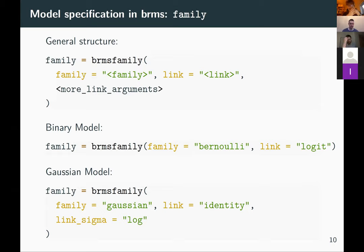To specify models in BRMS, first decide the model family — which just means the likelihood distribution. The family argument takes the name such as gaussian, bernoulli, or poisson, plus the link function. If the family has more than one distributional parameter, you can also specify additional link arguments for those parameters. For the binary model, the family is bernoulli with a logit link (the default). For the Gaussian model, the family is gaussian with an identity link for the mean, and optionally a link for sigma.